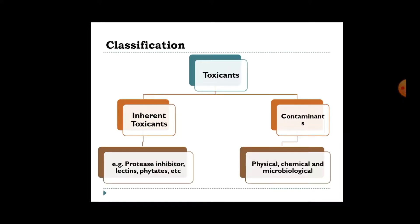Toxicants can be classified as inherent toxicants and contaminants. Inherent toxicants are those which are produced by the plant itself as a secondary metabolite as a defense mechanism. For example, anti-nutritional factors present in fruits, vegetables, and grains — such as protease inhibitors, lectins, and phytates.